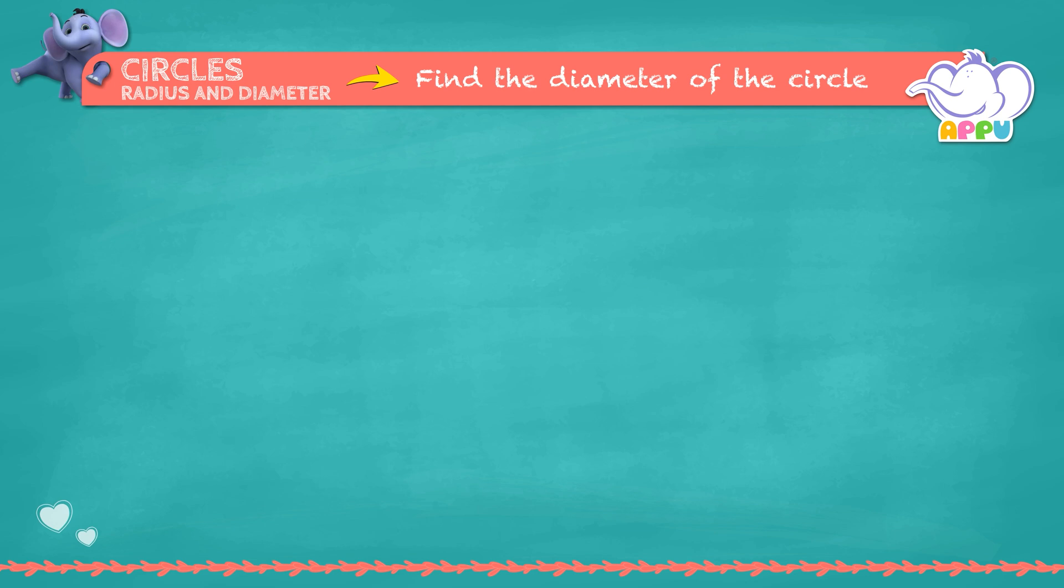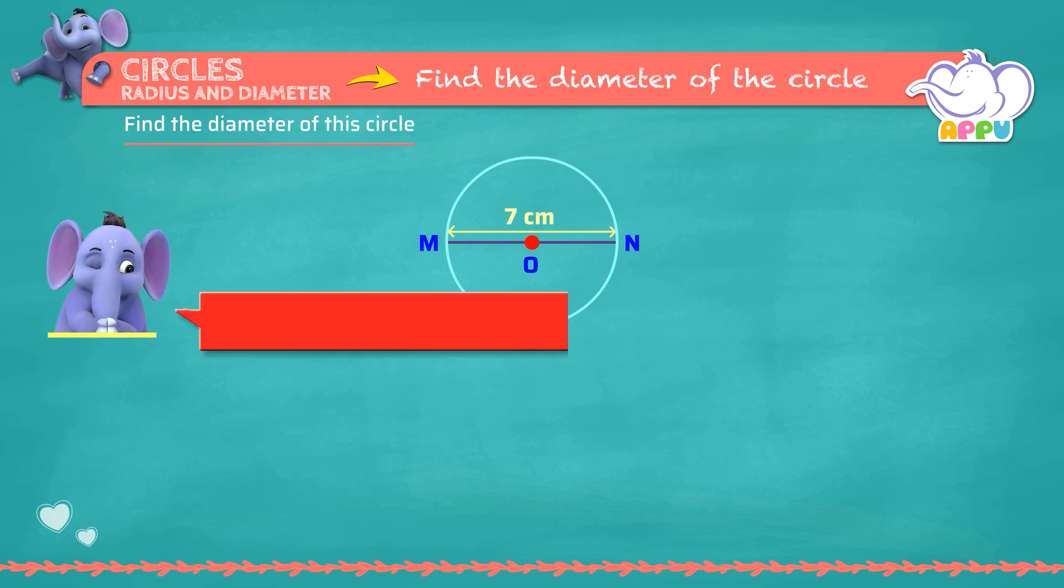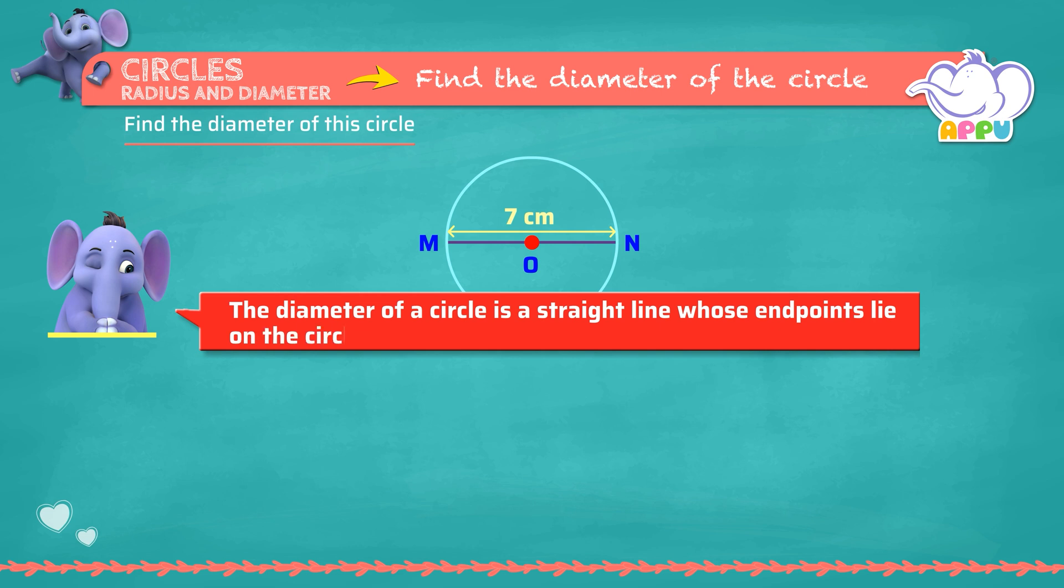Find the diameter of the circle. The diameter of a circle is a straight line whose endpoints lie on the circle and whose midpoint is the center of the circle.